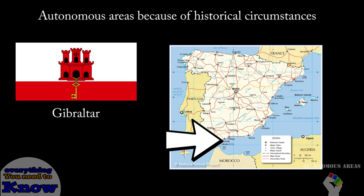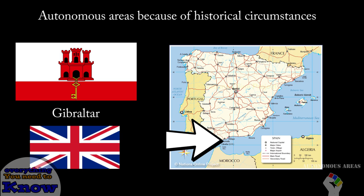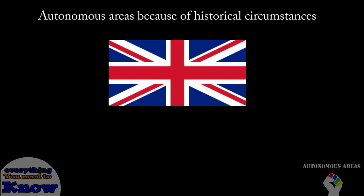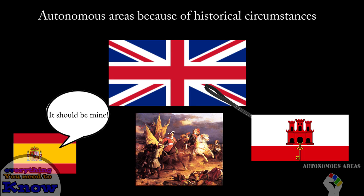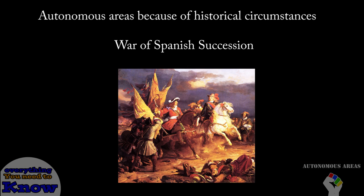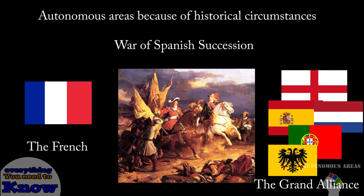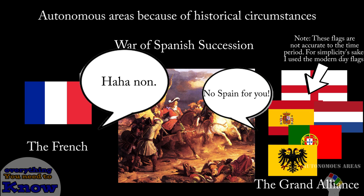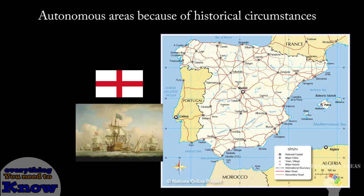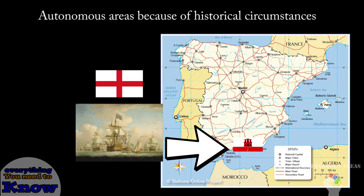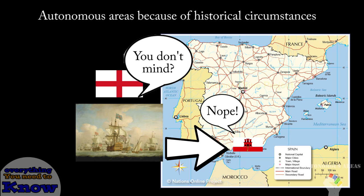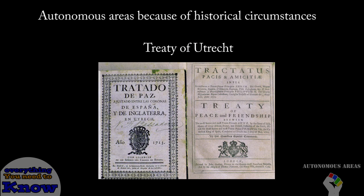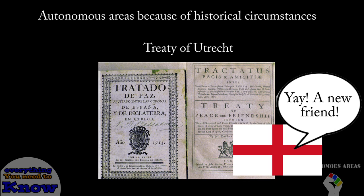Gibraltar is a city in the south of the Iberian Peninsula that is owned by Great Britain. The reason Britain owns a city that should be owned by Spain is because of the War of Spanish Succession. This war was fought between France and the Grand Alliance, which was a coalition of many countries who were against the French inheritance of the Spanish throne. England was a part of this alliance and thus sent a fleet of ships to help with the war effort in southern Spain. The fleet captured Gibraltar and used it as the allied port during the war.